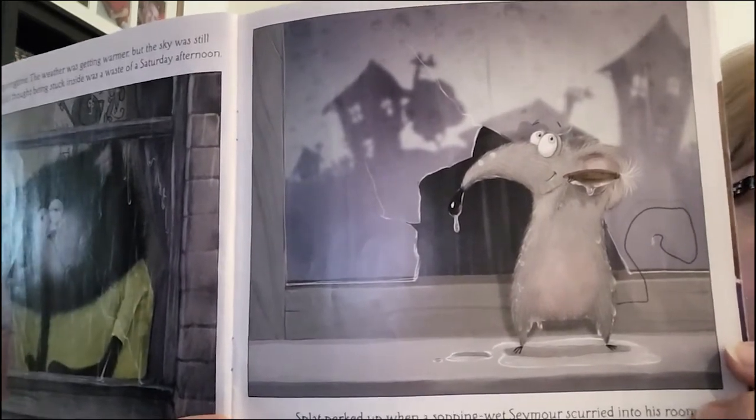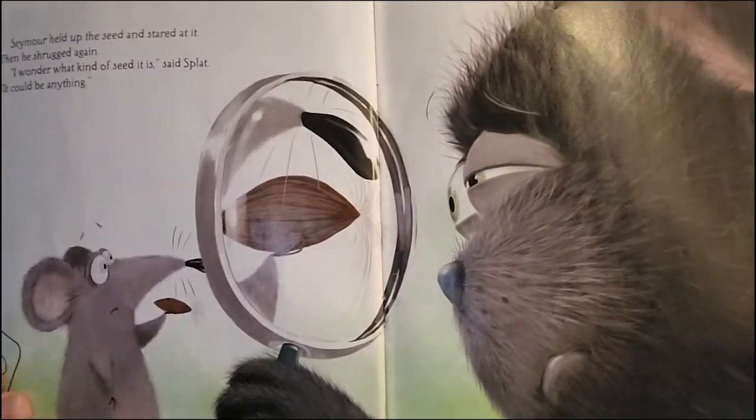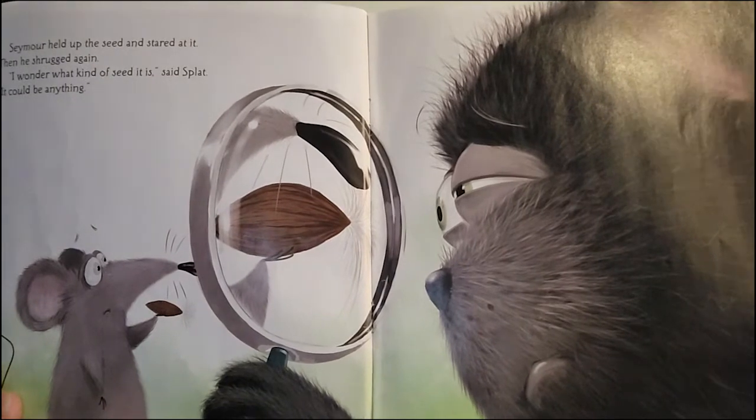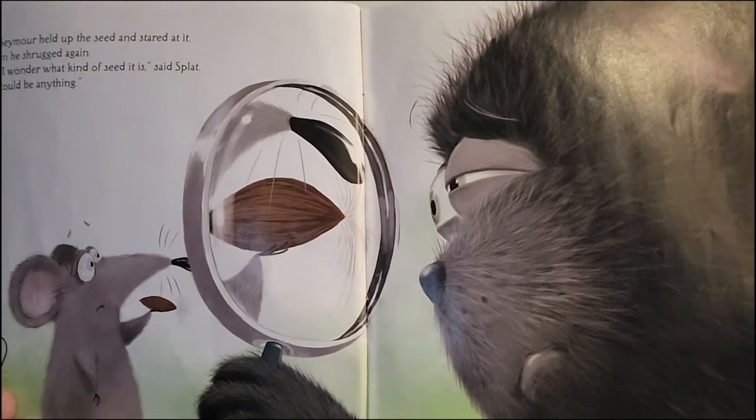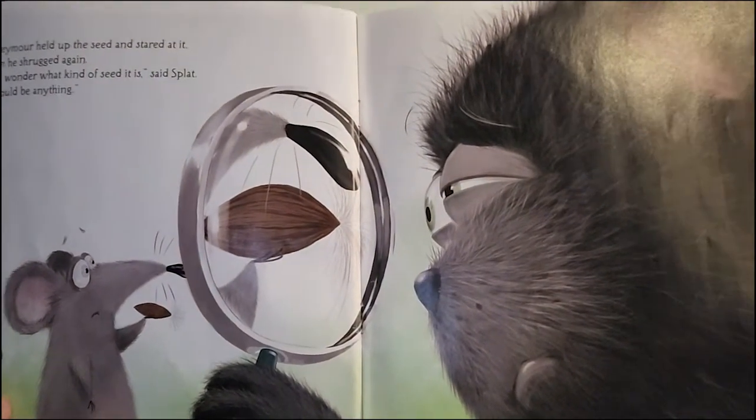Seymour was carrying a weird-looking seed. Where'd you get that? asked Splat. Seymour held up the seed and stared at it. Then he shrugged. I wonder what kind of seed it is, said Splat. It could be anything.